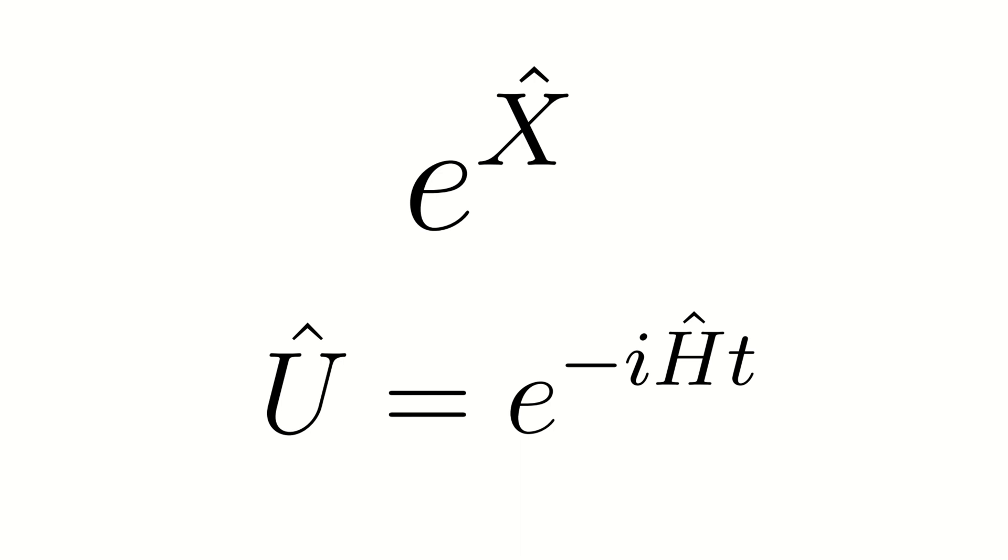Thus, e to the power of x is an operator, and usually we want to transform it into a matrix or apply it as a quantum circuit. But how can we do this if x is an operator?